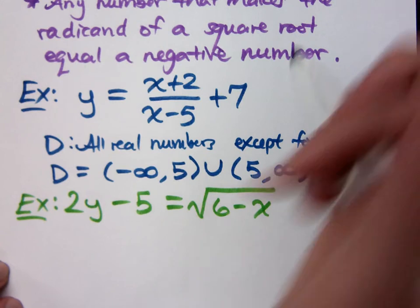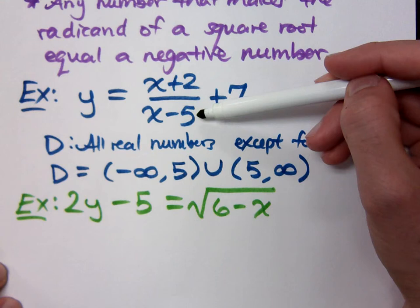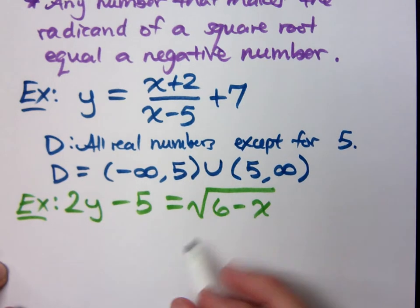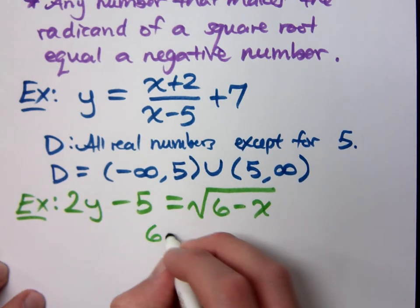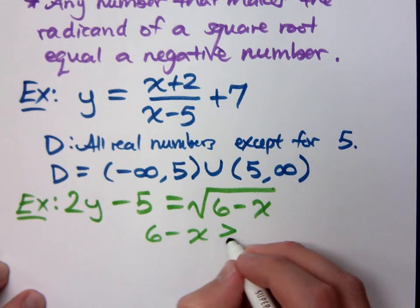So look at this. To find the restriction here, we found what would make the denominator equal to zero and we took it away. For this guy, what you need to figure out is this: I want my radicand, 6 - x, to be greater than or equal to zero.